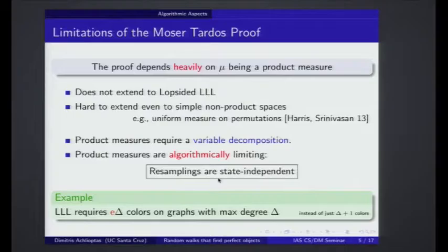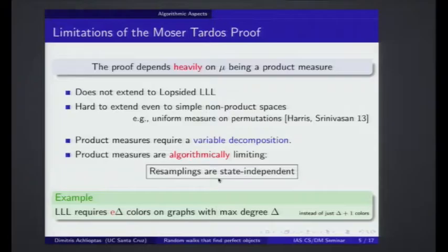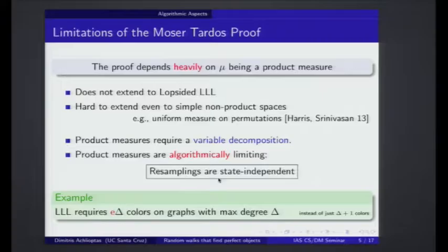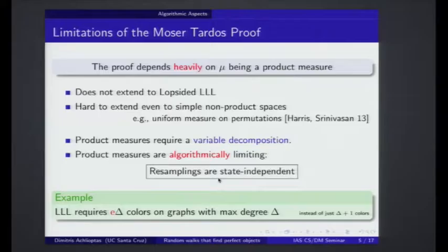As an example where this fails dramatically: consider a simple graph of maximum degree delta, where the goal is to color the vertices so that adjacent vertices have different colors. Trivially, you can do this with delta+1 colors. But if you try to give a bound on the chromatic number using the LLL, the best you can prove is that you need at least e times delta colors. The reason is roughly: imagine you have a vertex coloring and there is some edge which is violated. According to the rules of the game, the color assigned to the recolored vertex must be uniformly random over all available colors — you can't say 'I will try to avoid the colors currently in the neighbors.' So in order for a blind choice to avoid all delta colors, you need e times delta colors, so that the probability you have a new collision is as small as 1 over e.